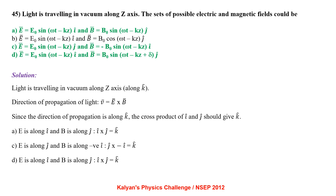Light is travelling in vacuum along the Z axis. The direction of propagation is given by V = E × B. Since propagation is along k̂, the cross product of i and j should give k̂. Possible field sets include E = E₀ sin(ωt−kz) î and B = B₀ sin(ωt−kz) ĵ. Options A, C and D are correct.